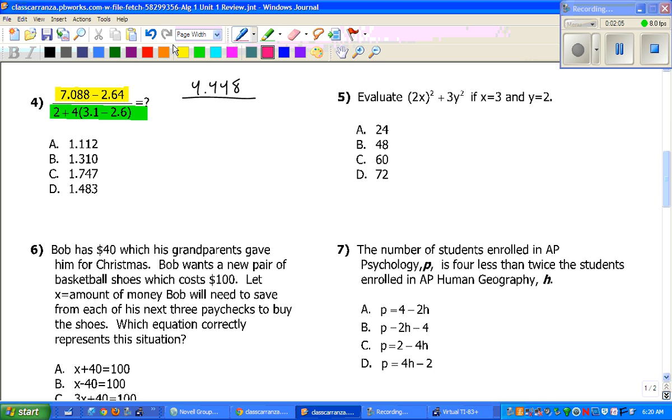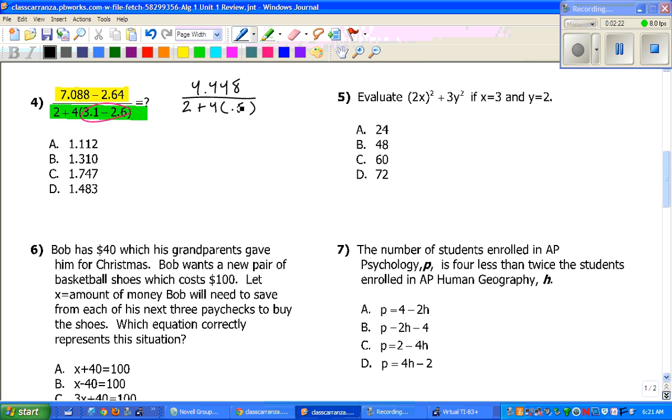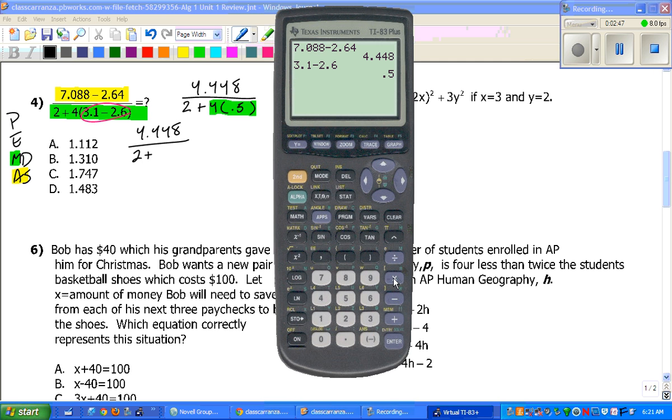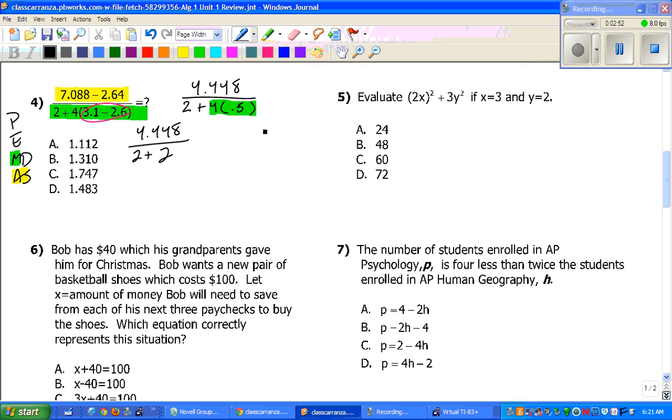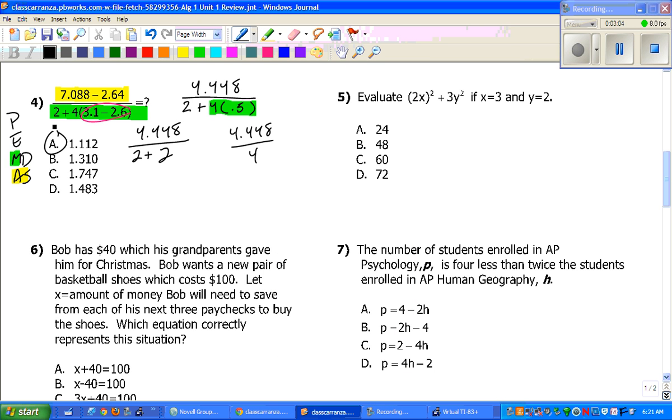So 4.448. Now, on the bottom, we need to do parentheses first. I'm pretty sure I know what 3.1 minus 2.6 is in my head, but just to double check, and I was correct. So 0.5. Now, remember, order of operations here. We have to multiply. Multiplication comes before addition. So we have 4.448, 2 plus 4 times 0.5 is 2, but just to double check. And then 4.448 divided by 4. Plug that into your calculator, and you get 1.112 is your final answer.